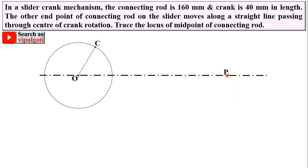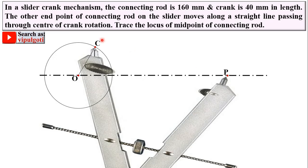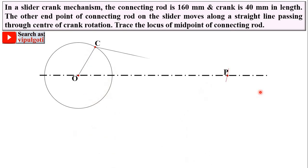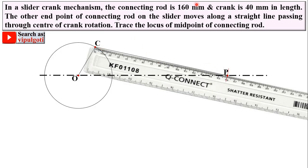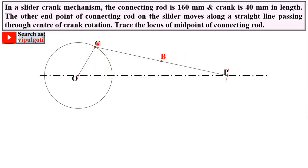You can locate the P point with a scale or with a compass. CP is equal to the connecting rod length, which is 160 mm. Draw an arc with C as center to locate the P point. Then join CP. Since we need to trace the locus of the midpoint of the connecting rod and its length is 160 mm, the midpoint is at 80 mm. Locate the midpoint of the connecting rod and name it B — so B is the midpoint of the connecting rod.